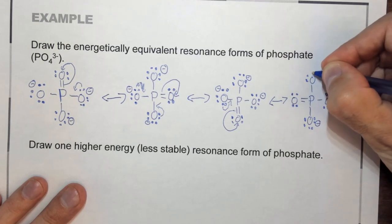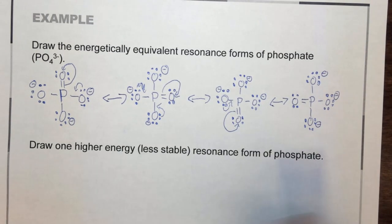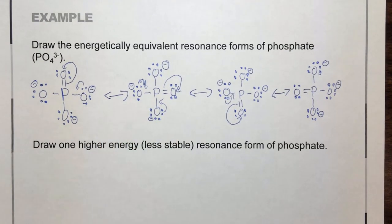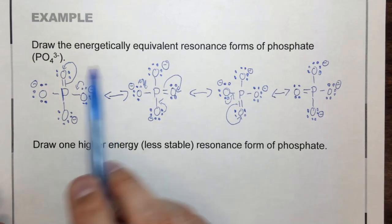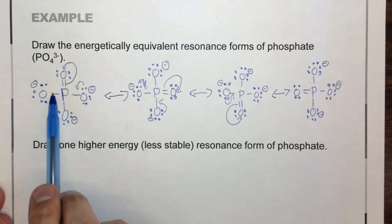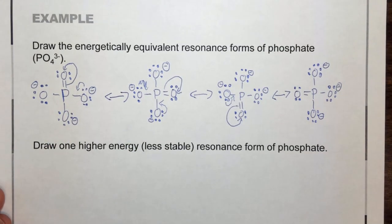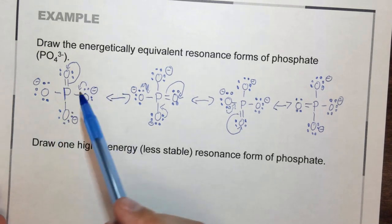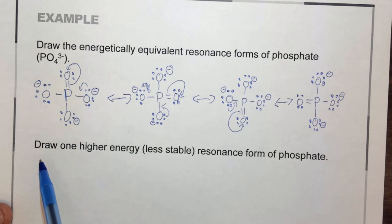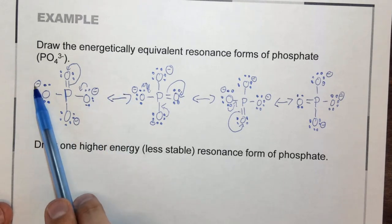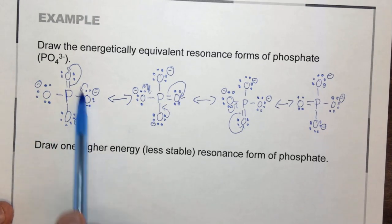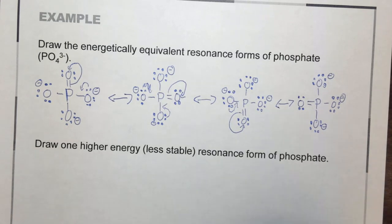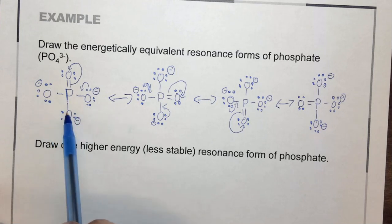These four resonance forms are energetically equivalent - they all have the same charges, the same number of double bonds and single bonds, and this molecule exhibits resonance. One question you might be asked is: does phosphate exhibit resonance? The answer is yes, and these are the four equivalent resonance forms. Note that there is one double bond and three single bonds in all the resonance forms drawn, but it doesn't actually exist this way. In actuality, these are basically four one-and-a-quarter bonds. Three of the oxygens are negative and one is neutral, but in actuality each oxygen has about a three-quarters minus charge. If you look at bond lengths, they would all be the same length - not one short and three long.